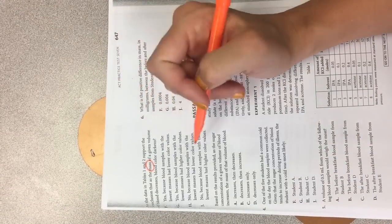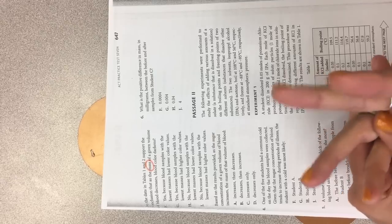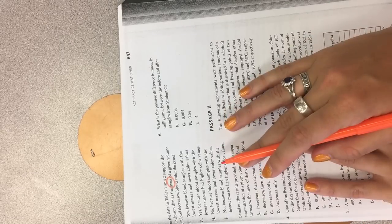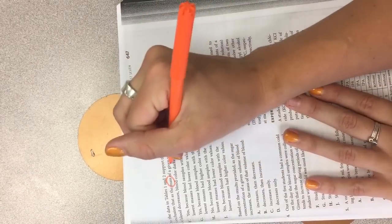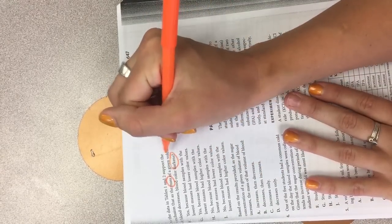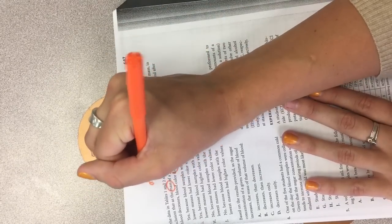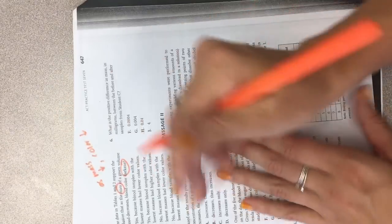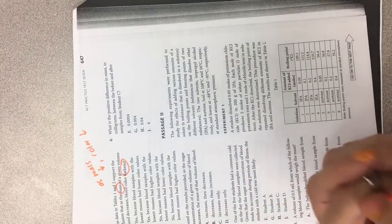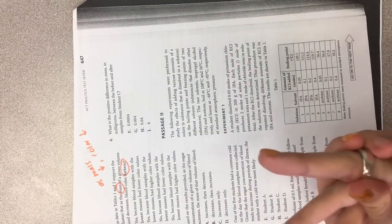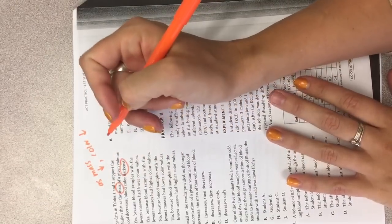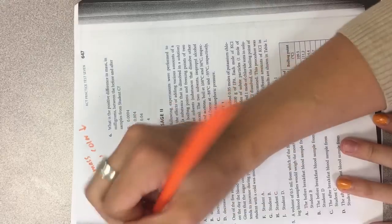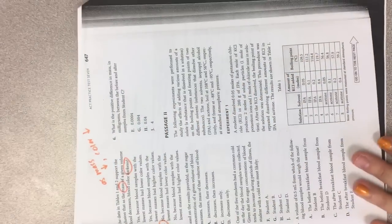So yes, because the blood samples with the lowest masses had the lower color values. Oh, we want it to be darker, which is the higher values. So actually, no. So as the mass went down, the color decreased. So that's going to be a no answer. So yes, because blood samples with the lowest masses had higher color values. No, because blood samples with the lowest masses had lower color values. So the answer to that one is H.